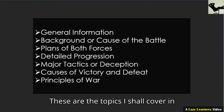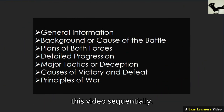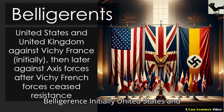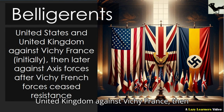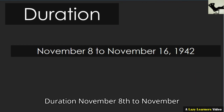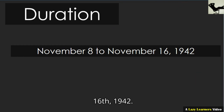These are the topics covered in this video sequentially. First, some general information of the battle. Belligerents: initially, United States and United Kingdom against Vichy France, then later against Axis forces after Vichy French forces ceased resistance. Duration: November 8th to November 16th, 1942.